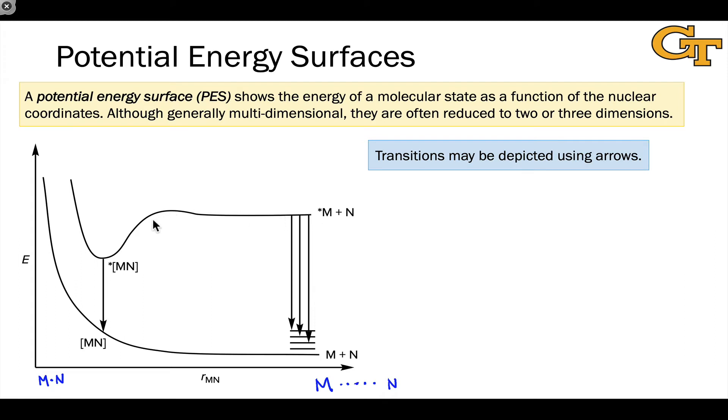The lines and curves here represent the energy at various values of RMN for different types of states. And the difference on this diagram is that the higher surface is an excited state, what we call an excited potential energy surface. And what's shown on the bottom is the ground state potential energy surface.